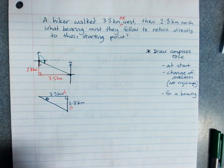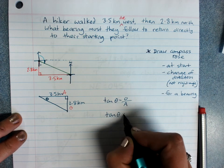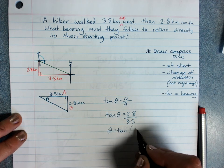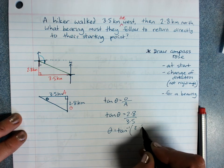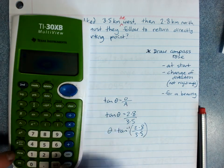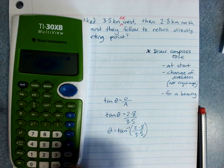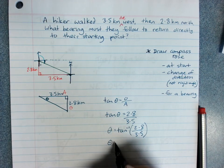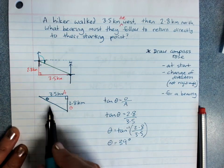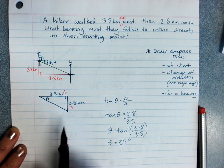Opposite, adjacent. Tan theta equals 2.8 over 3.5. Using inverse tan, because we're finding an angle. Grabbing a calculator, which is pretty dodgy. And I've got theta equals 39 degrees. Now that's not my bearing, because that's just that angle there. And I must also add the 90 degrees.